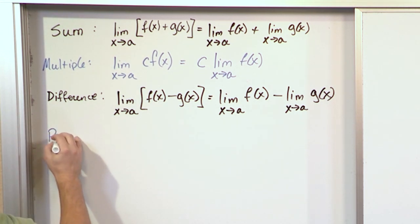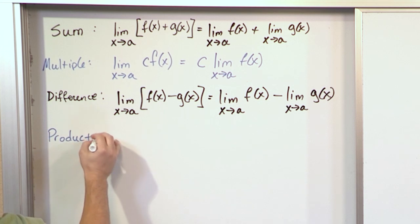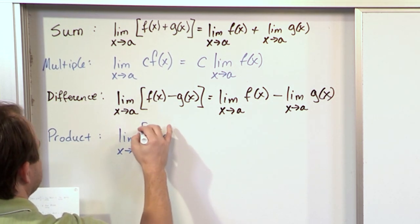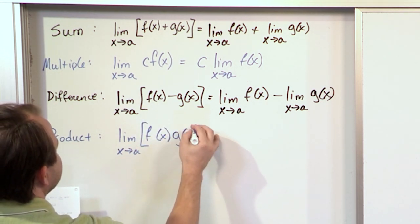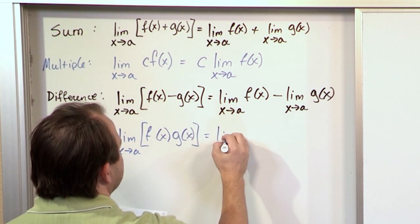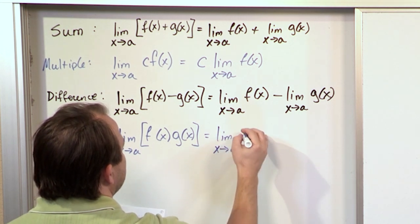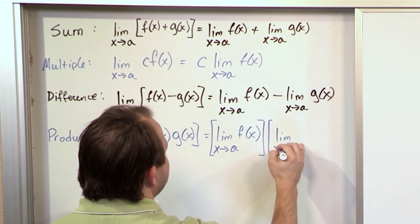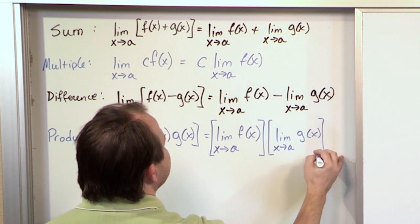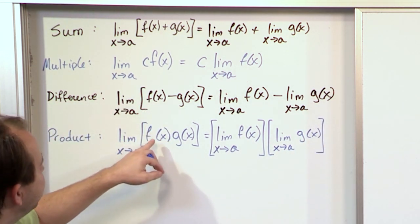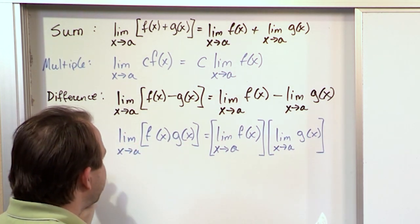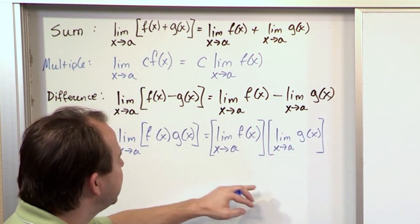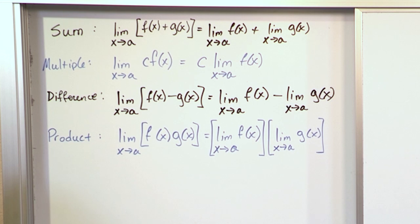Then we have one called the product rule. If we have the limit as x approaches a of f of x times g of x — these are multiplied together — it's going to be the limit as x approaches a of f of x multiplied by the limit as x approaches a of g of x. So it's the same story, different verse. If you have two functions multiplied together and you're taking the limit, then I can break the functions apart, find the limits of each individual function, and then multiply together.